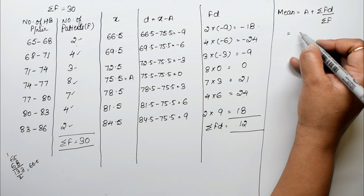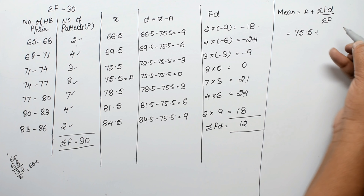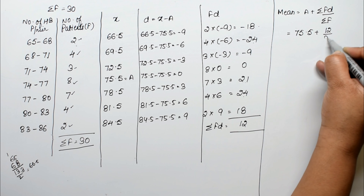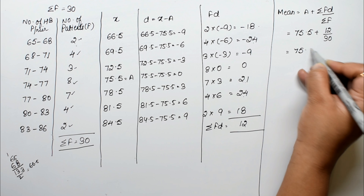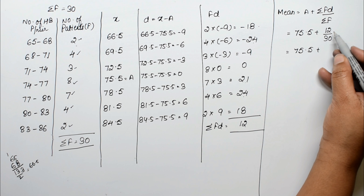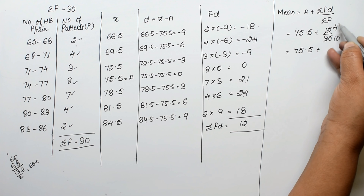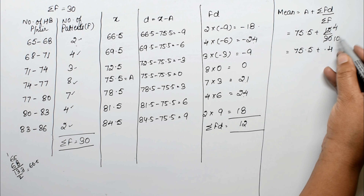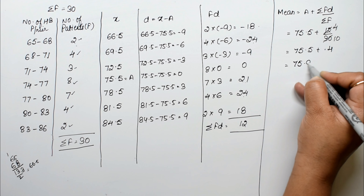Calculating: 12 divided by 30 equals 0.4. So mean equals 75.5 plus 0.4 equals 75.9. The mean heartbeat per minute for these patients is 75.9.